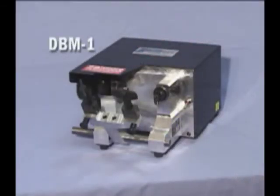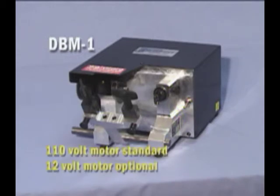The Freeman DBM-1 is a compact, lightweight, flat steel key duplicator, perfect for the shop or van. A 110-volt motor is standard on the DBM-1, but a 12-volt motor can be substituted at no charge.